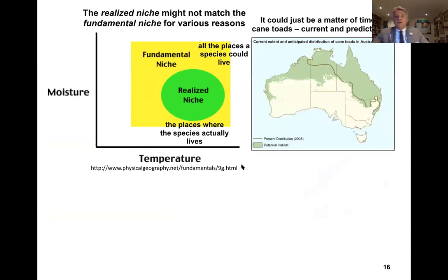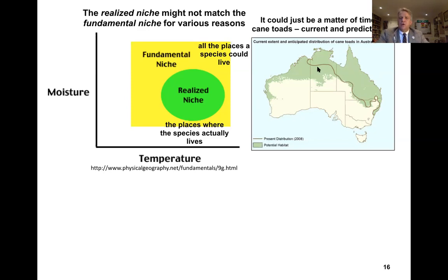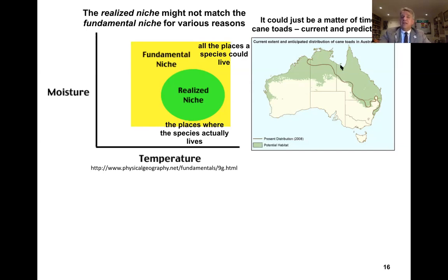It could just be a matter of time. Here is a map of Australia looking at the environmental variables of habitats that cane toads occupy. Looking throughout the Australian continent at areas with those same environmental variables, there are areas of Australia not yet occupied by cane toads. This line shows the limit of cane toad range in the northeastern part of the continent — they are not on the other side of this line. It could simply be that there hasn't been enough time, meaning this front may move forward.